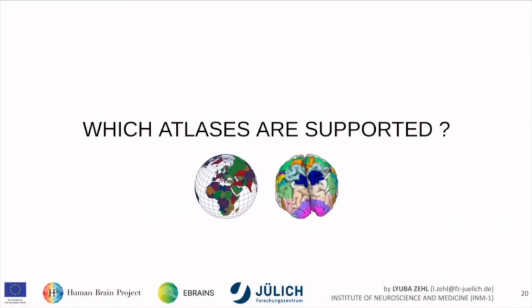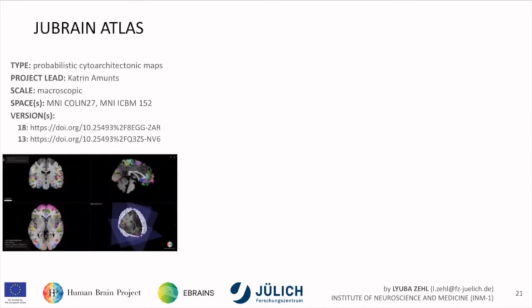Getting back to the general atlases: which atlases do we actually support? One is the BigBrain parcellations in development. We also have the JuBrain atlas, developed in Jülich by Katrin Amunts. It's a probabilistic cytoarchitectonic atlas at macroscopic scale — in principle a similar method to the BigBrain but less detailed, then back-transferred to MRI space at one millimeter resolution, transposed into MNI Colin 27 as well as MNI ICBM 152 from the version I mentioned.